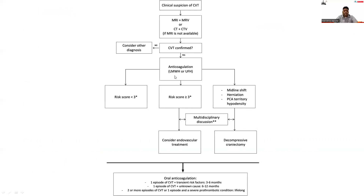If the risk score is greater than three, consider endovascular treatment, with a combined multidisciplinary decision involving neurologists, neurosurgeons, interventional radiologists, and intensivists. If the risk score is less than three, then consider anticoagulation. If there is midline shift, herniation, or posterior cerebral artery territory hypodensity, then proceed to decompressive craniectomy.